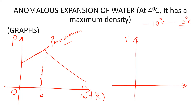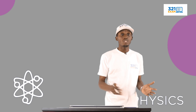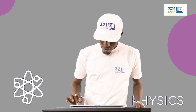Looking at the volume-temperature relationship: the volume reduces from 0 to 4°C, reaching minimum volume at 4°C, then increases after that. So water has minimum volume and maximum density at 4°C. This is the graph of density versus temperature and volume versus temperature, based on the unique characteristics of water — the anomalous expansion of water. Water from −10 to 0°C expands; from 0 to 4°C it contracts, having maximum density and minimum volume at 4°C; and from 4 to 100°C it expands like every other liquid.